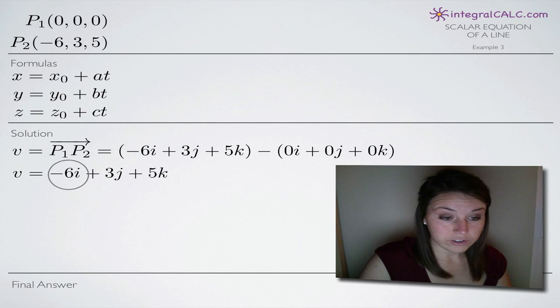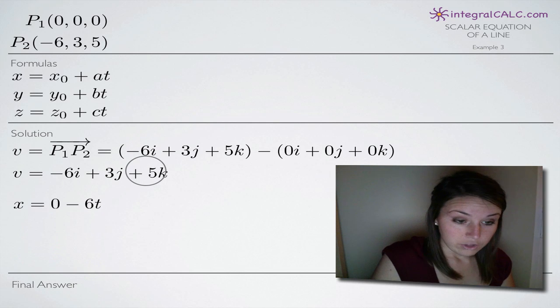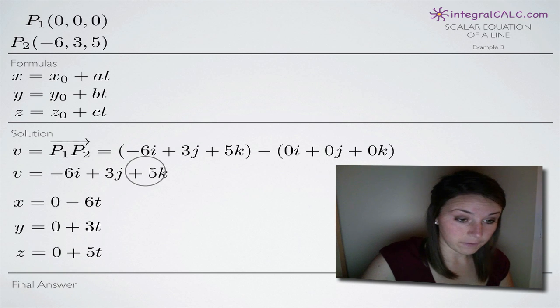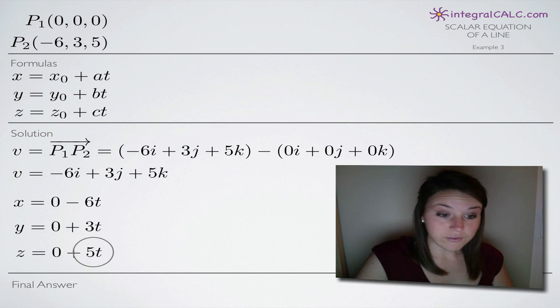So a is the coefficient on i, in this case -6. B is the coefficient on j, which is 3. And c is the coefficient on k. So we'll get these three equations here. x equals 0, that comes from x₀, which comes from this 0 here. And then -6t, we pull this -6 here for a. We'll get y = 0 + 3t and z = 0 + 5t.